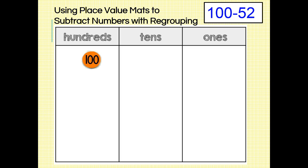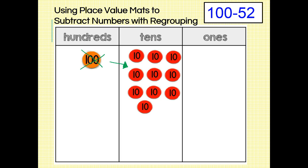We need to be able to subtract five tens disks and two ones disks, but we don't have any tens or ones to subtract from. That means we have to regroup. Let's start by trading our hundreds disk for 10 tens disks. We still need some ones disks though, so now let's trade one of our tens disks for 10 ones disks.